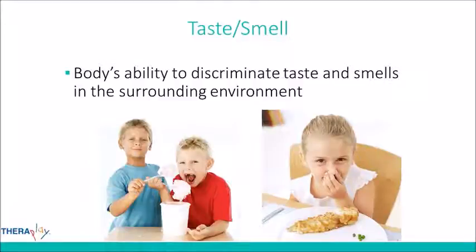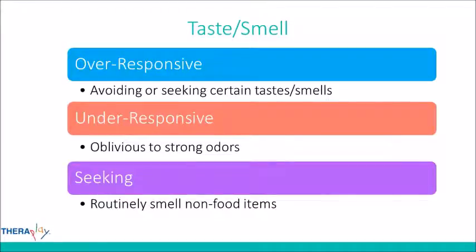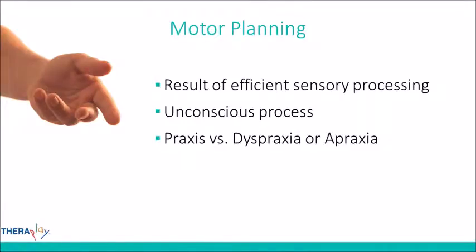Taste and smell is the body's ability to discriminate tastes and smells in the surrounding environment. Kids who are over-responsive avoid or seek out certain tastes or smells. Under-responsive kids may not notice strong odors or tastes. Sensory seekers in this area are routinely smelling non-food items.